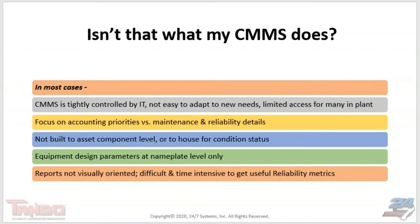One other primary issue is that many CMMS or EAM systems don't build their location hierarchy down to an asset component level — they stop at a machine train or system level. In reality, reliability occurs at knowing what's happened with each component — each repairable asset like a motor, pump, gearbox, or transformer. In most cases they're lucky to even have nameplate information, much less bearing details like drive-end versus non-drive-end, which would be very helpful to vibration analysis technicians.